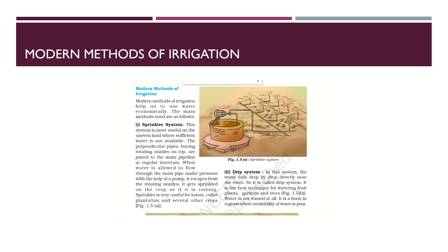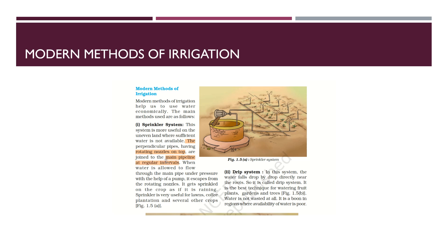We are starting with the modern methods of irrigation. Previously we discussed the traditional methods, so today the two major modern methods of irrigation are the sprinkler system and the drip system. The sprinkler system is used where a sufficient amount of water is not available and the land is uneven. Perpendicular pipes are put with a rotating nozzle on their tips, and these are joined with the main pipelines.